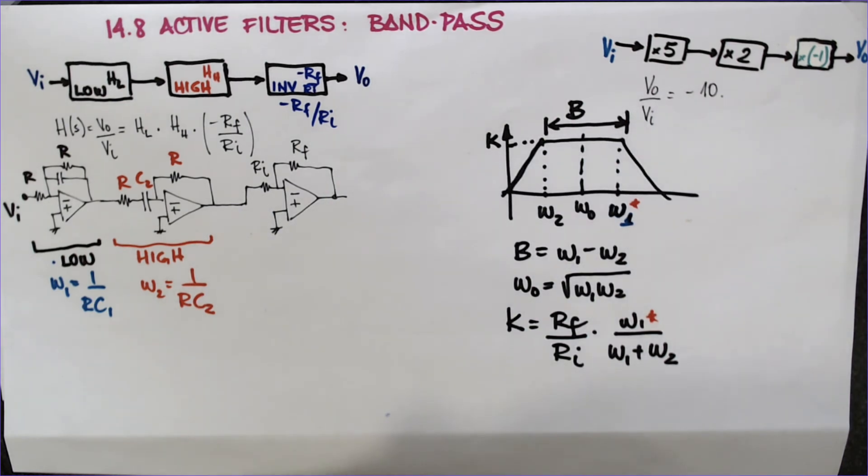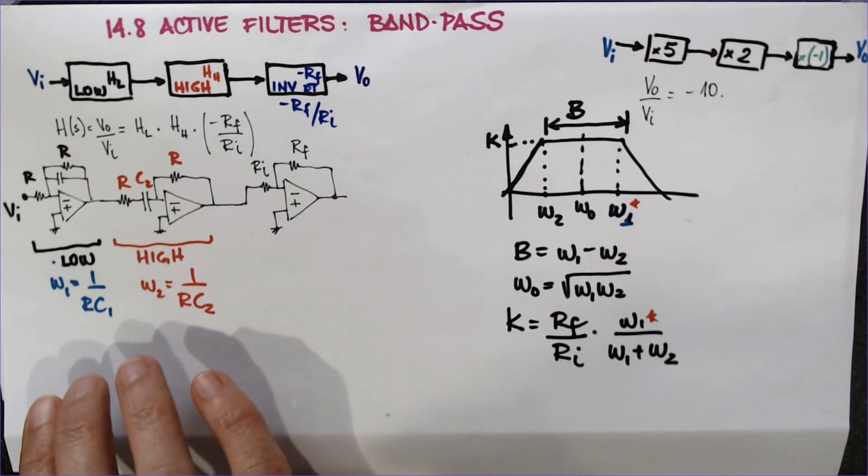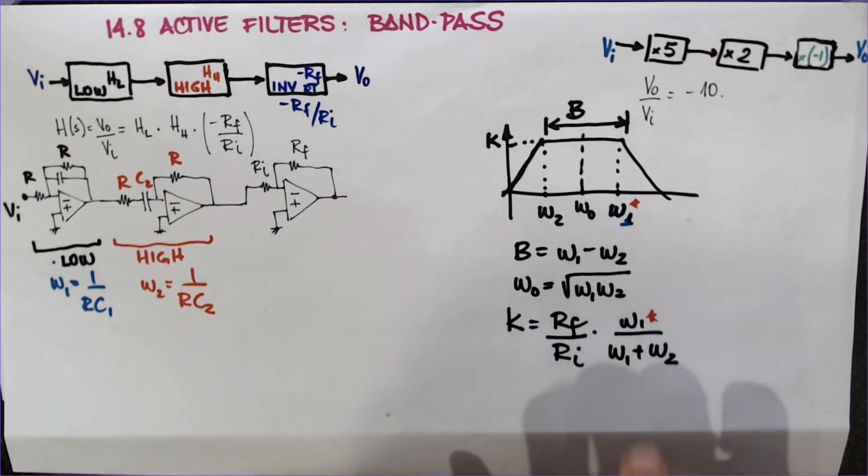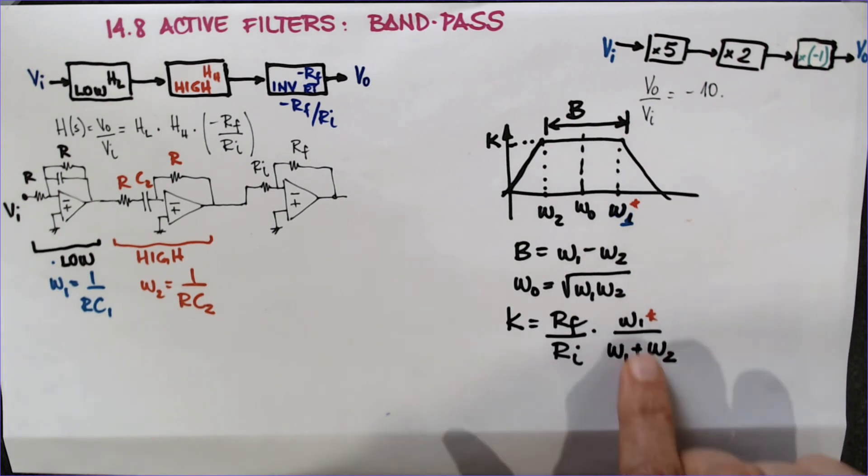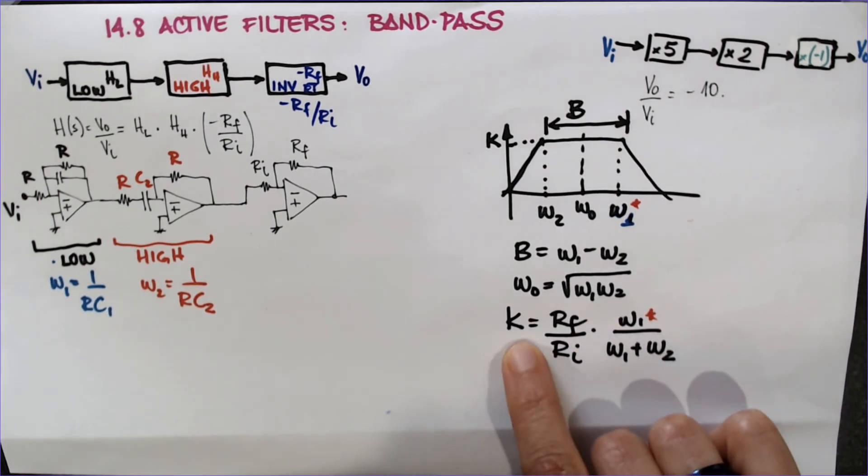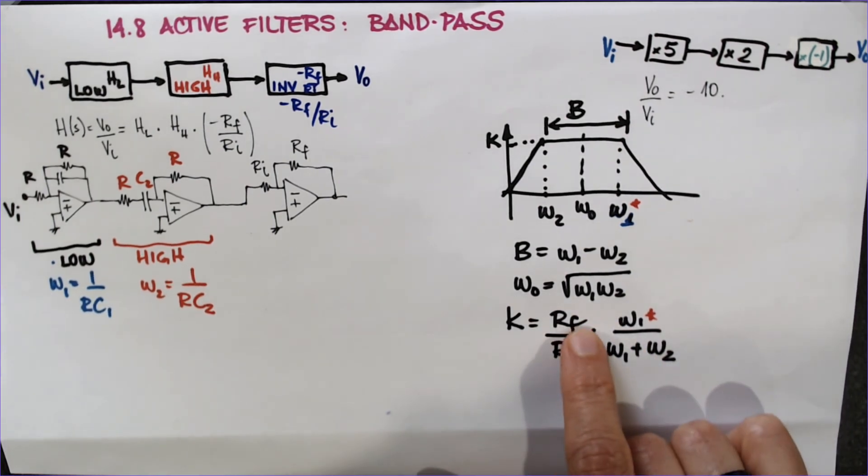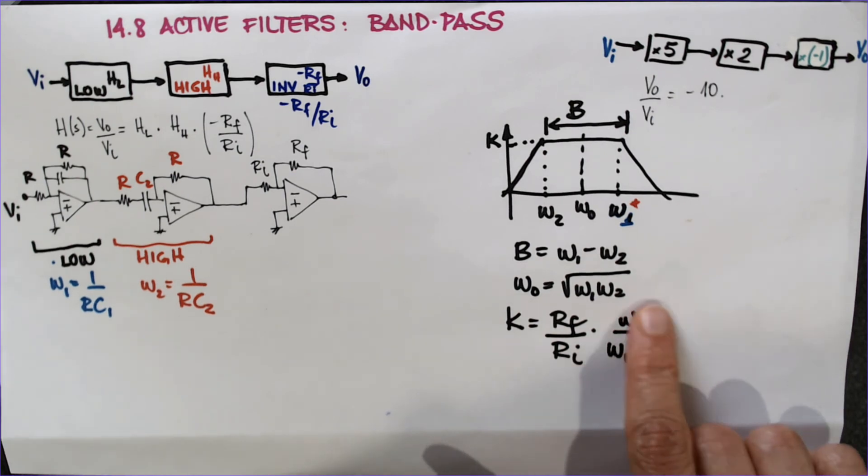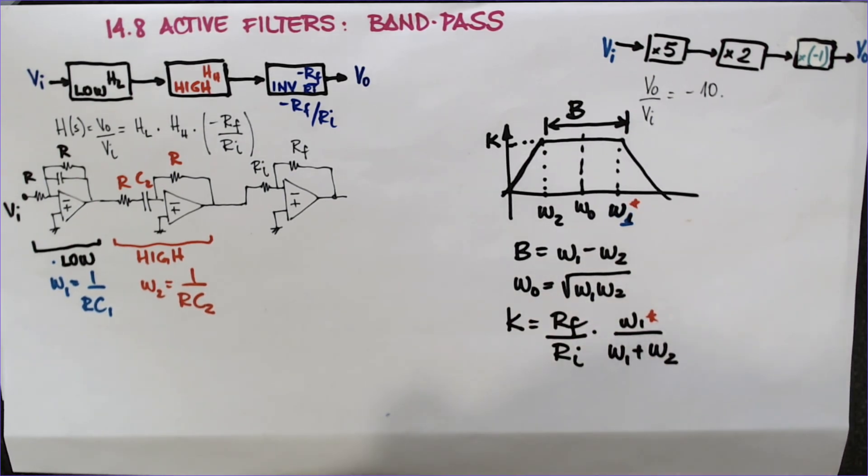So, with this, basically you can design an active filter that's band pass by selecting values for resistors, capacitors, and whatever you want for K. Then you need to know the omegas first, then set the gains for the gain with Rf and Ri. Okay, that should be straightforward.